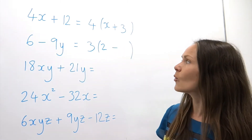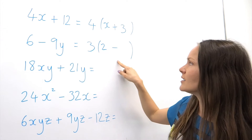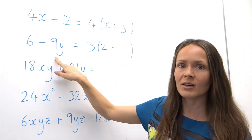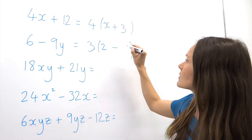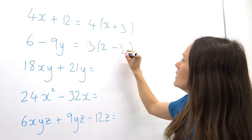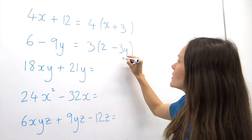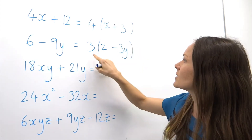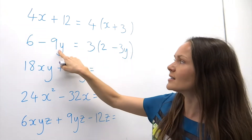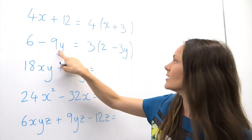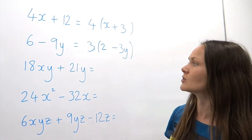Now open your set of brackets, because we've taken out everything that's common in those two terms. What do you multiply 3 by to get back to 6? That's 2. This time it's minus, not plus. What do you multiply 3 by to get back to 9y? Well, 3 times 3 is 9, so I put in 3, and I need to make sure I've got a y in there too, because 3 multiplied by 3y is 9y.